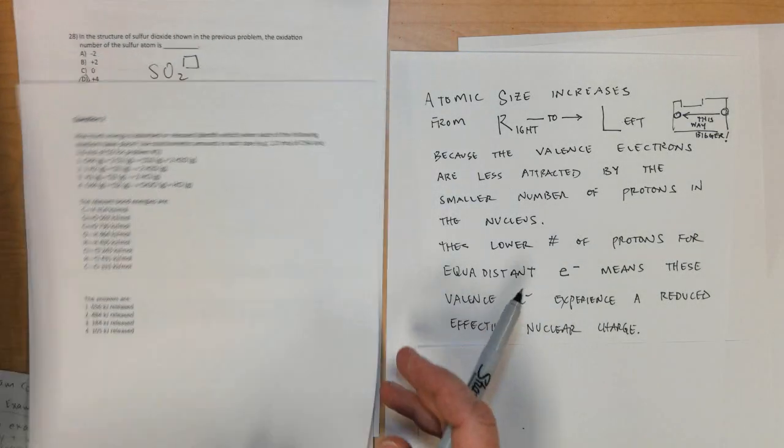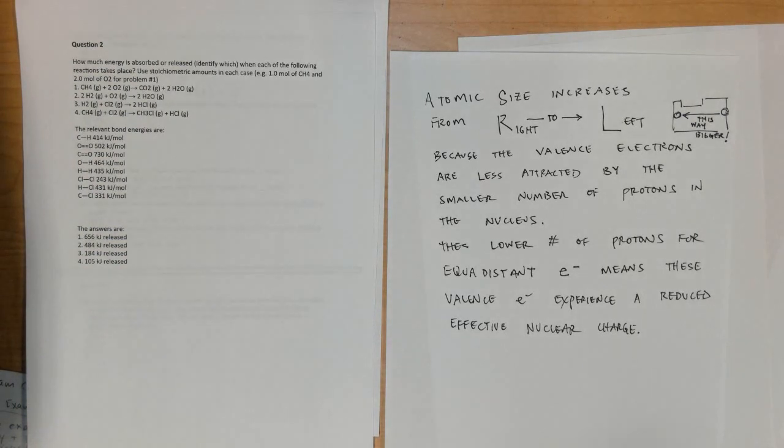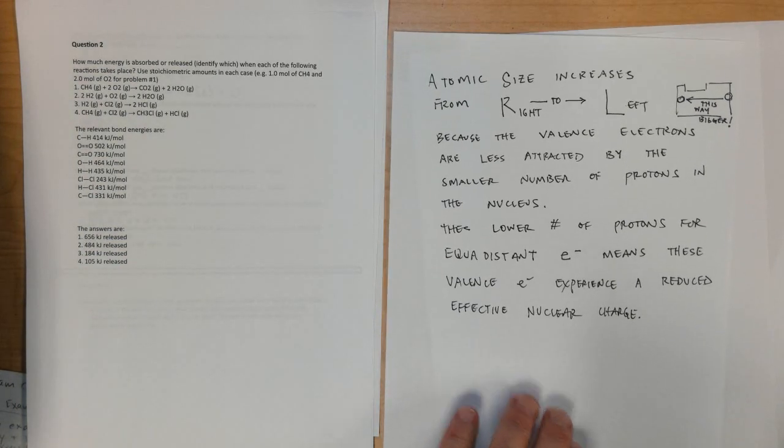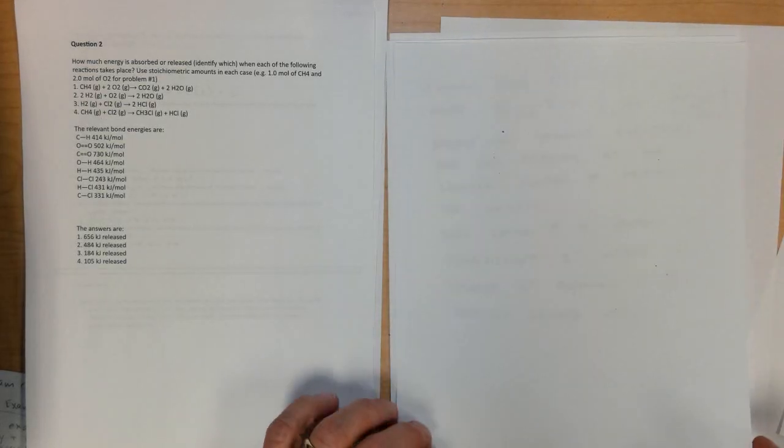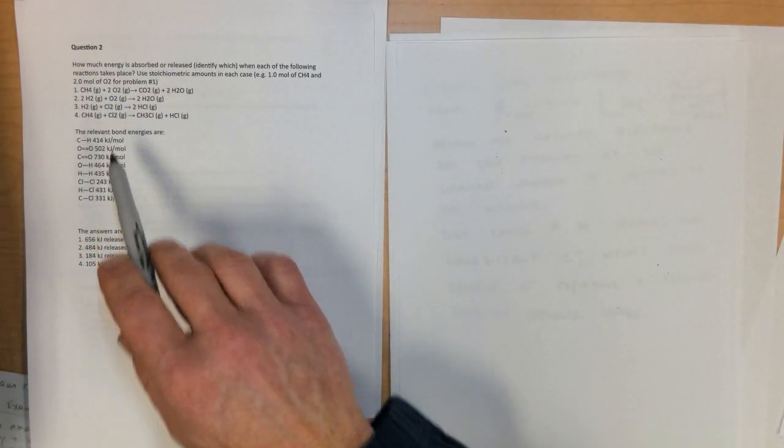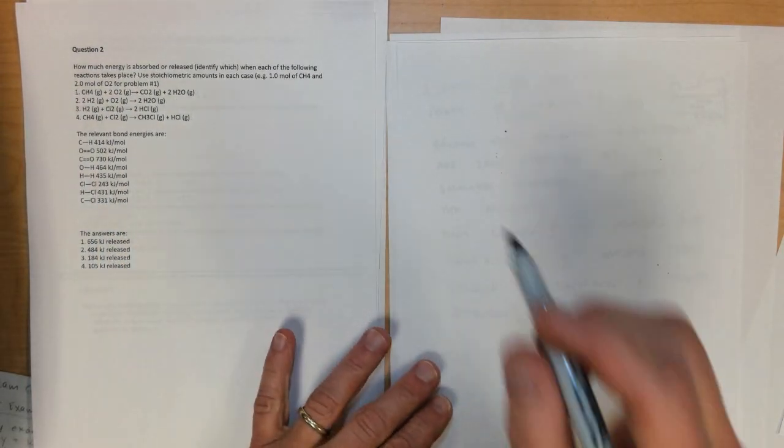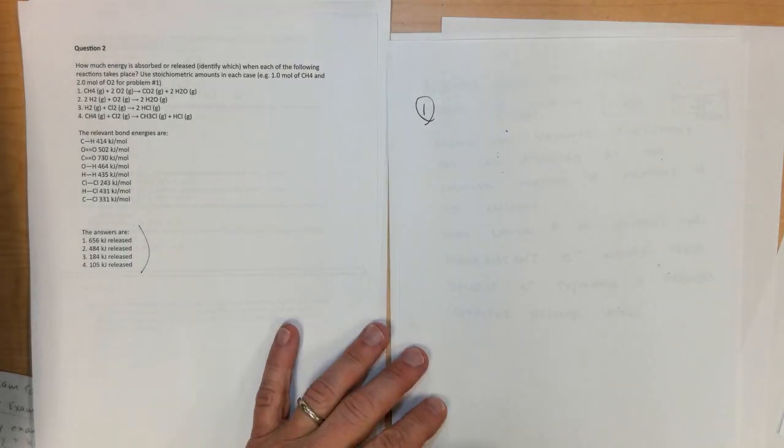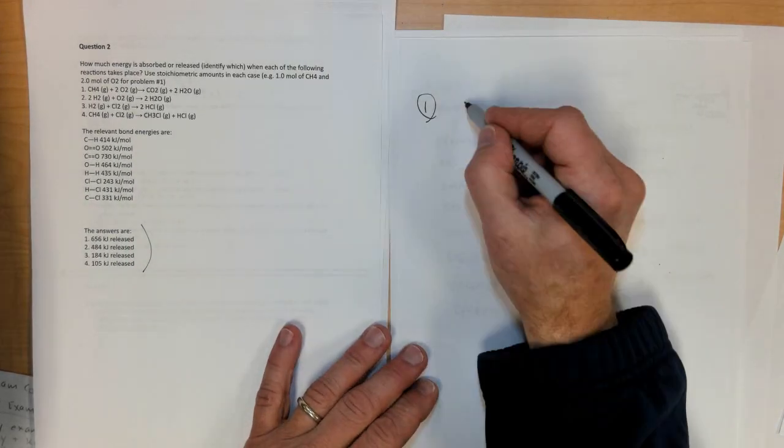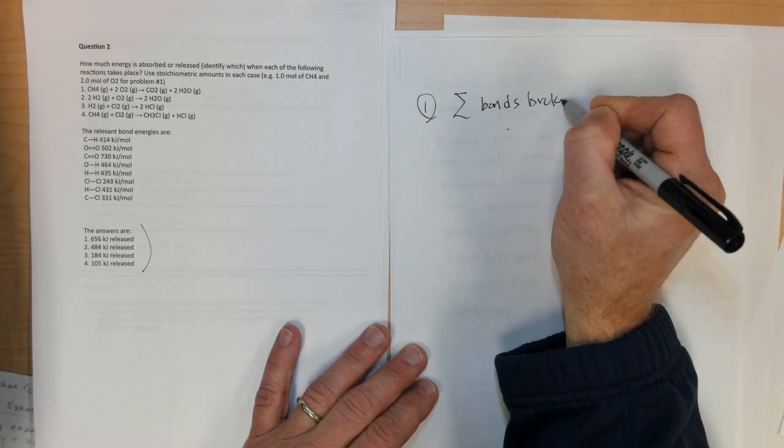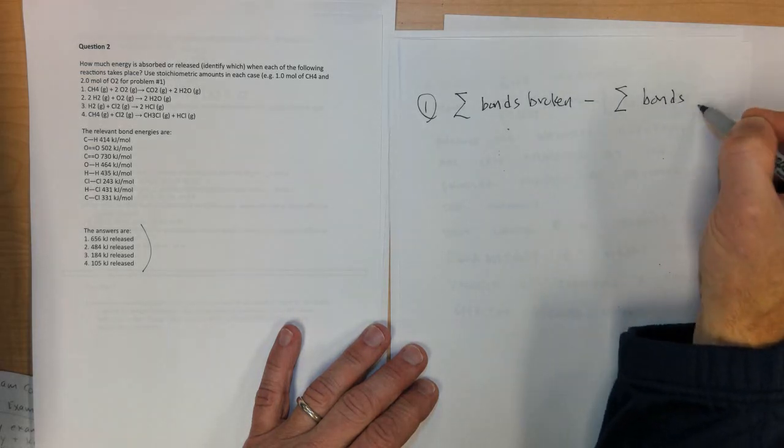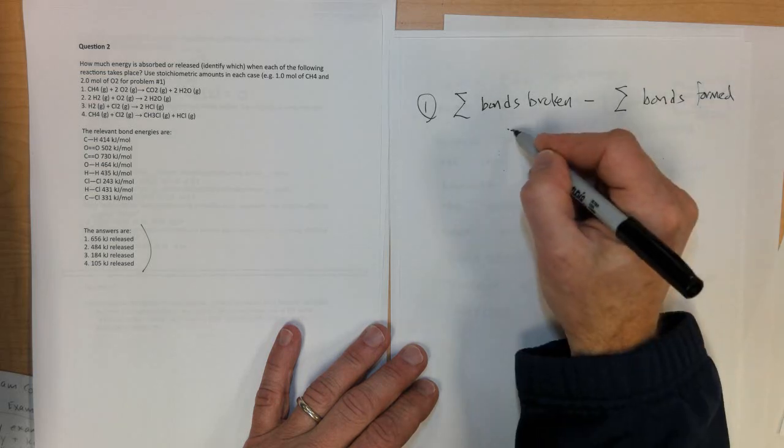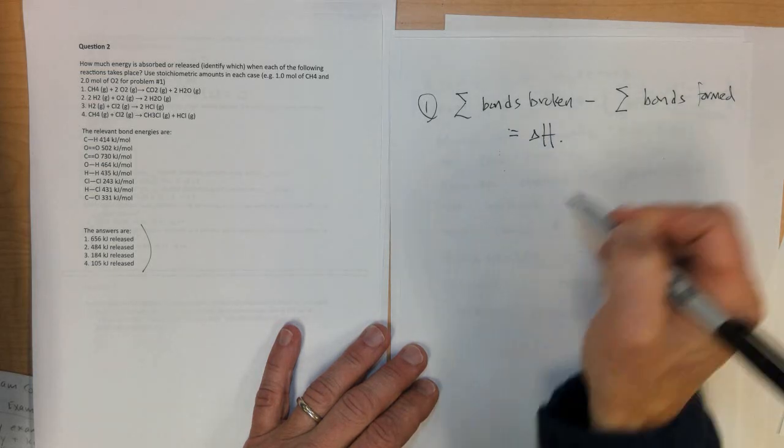Question number two. How much energy is absorbed or released when each of the following reactions take place? Use stoichiometric amounts. And you can see in here it's one to two ratio and here one to two ratio. Let's do number one and the answers are all given below down here for each one. Remember it's always the summation of the bonds that are broken minus the summation of the bonds that are formed. And these will give you the good estimate of the enthalpy change for the reaction.